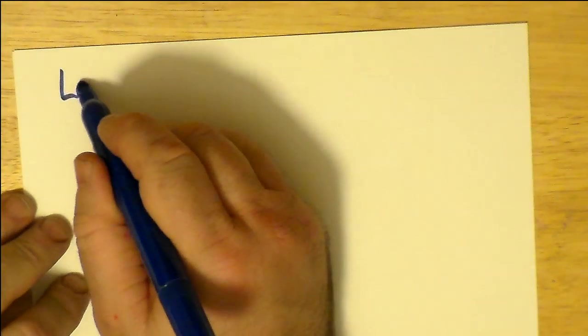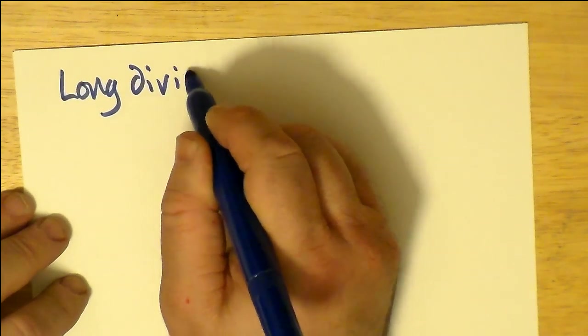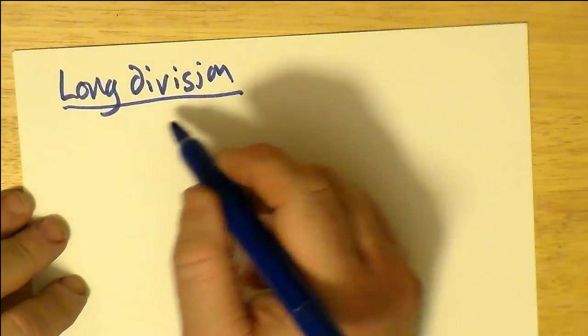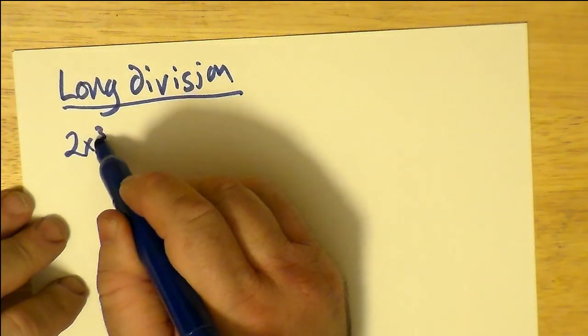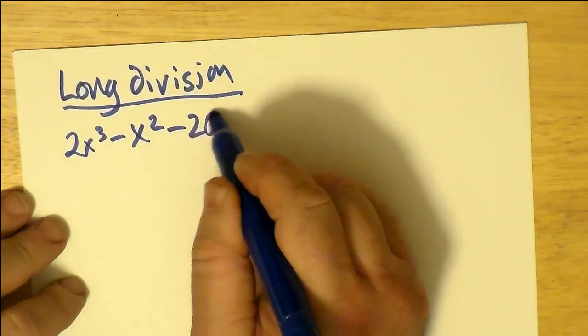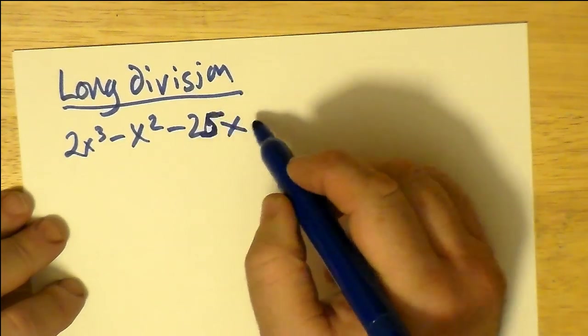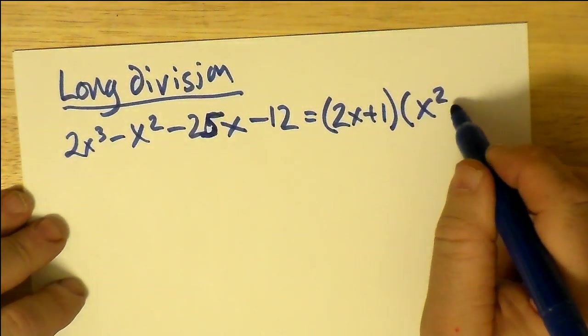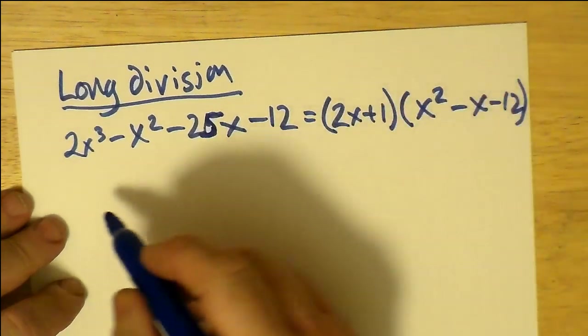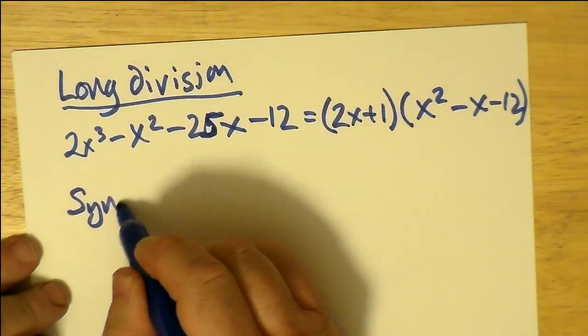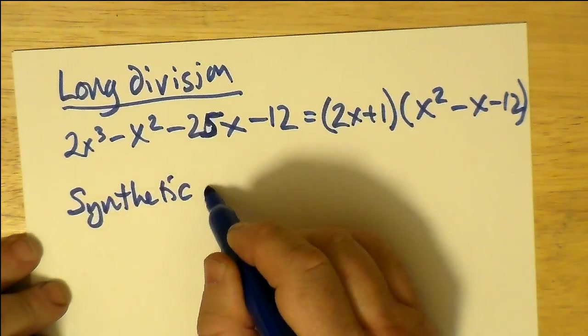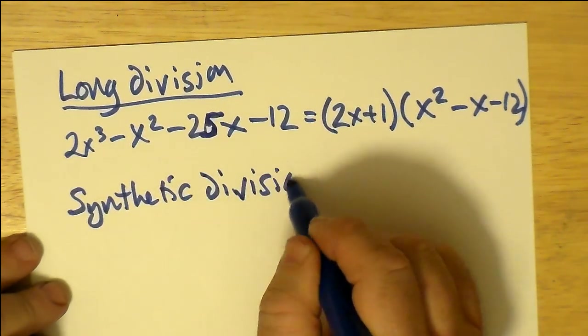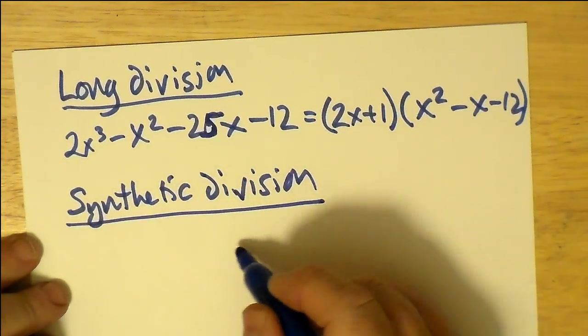To summarize, the result we got from long division was to say that 2x³ - x² - 25x - 12 equals (2x + 1) multiplied by (x² - x - 12). Comparing that with synthetic division, we said that the same cubic was actually equal to (x + 1/2)...